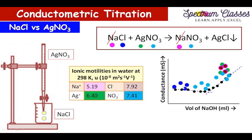Here you can see why this decrease occurs. Na+ is everywhere and its conductivity value contributes throughout. Cl− decreases from the solution and NO3− is introduced. Since the conductivity value of NO3− is slightly less than that of Cl−, there is a slight decrease observed in the graph. After the equivalence point, we are further adding Ag+ and NO3−, so NO3− is present in double amount and Ag+ is also there along with Na+.